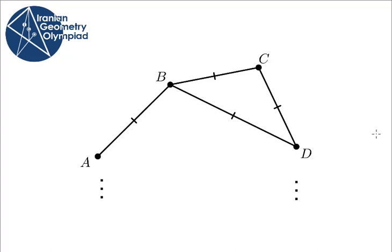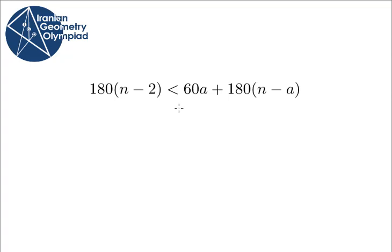Consider the sum of our n-gon's angles. Let a be the number of vertices whose angle is 60 degrees. We know that every other angle is at most 180 degrees.